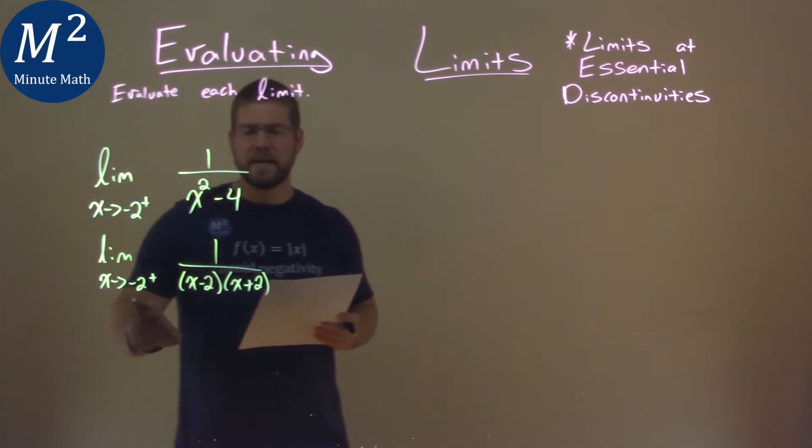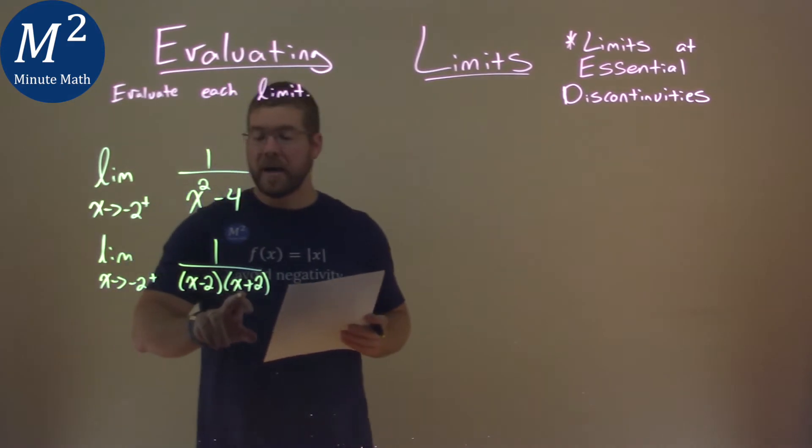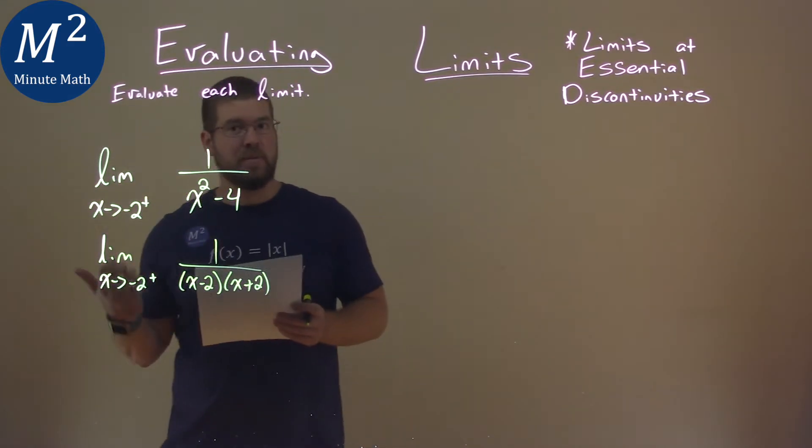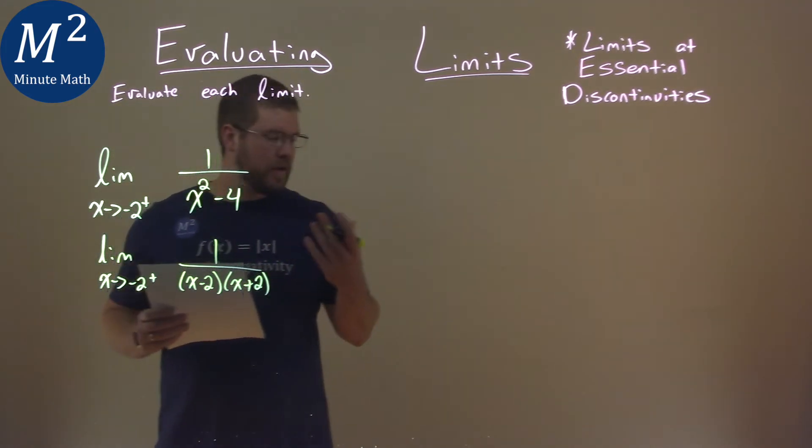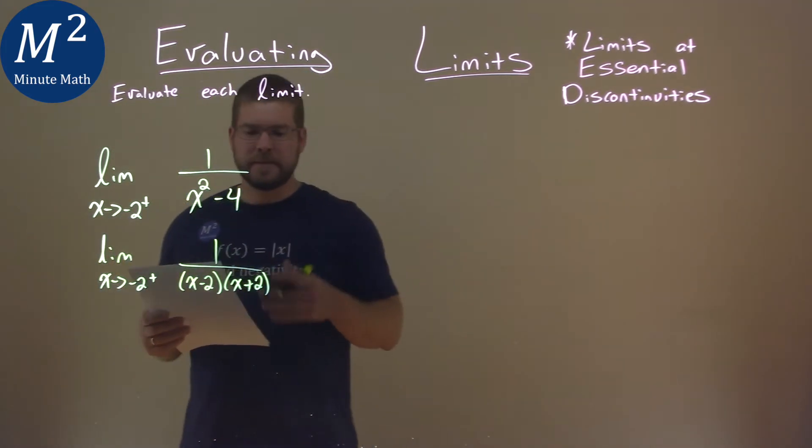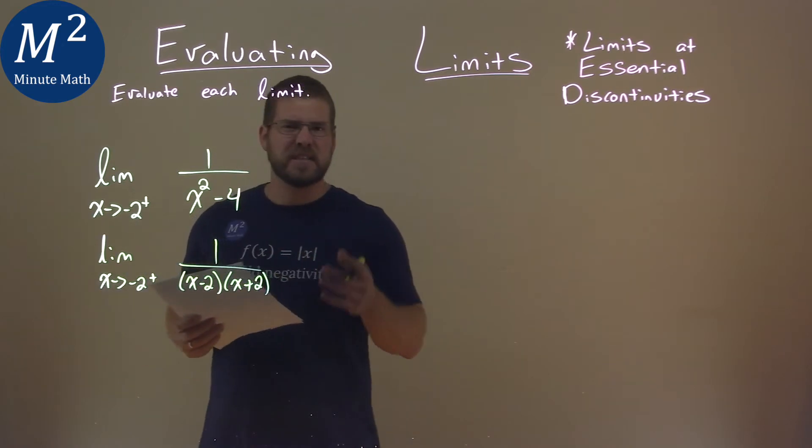And notice if we plug negative 2 in for x directly, we'll be dividing by 0, and we don't like that. So we have to use what we know about limits here and try to understand what's going on.